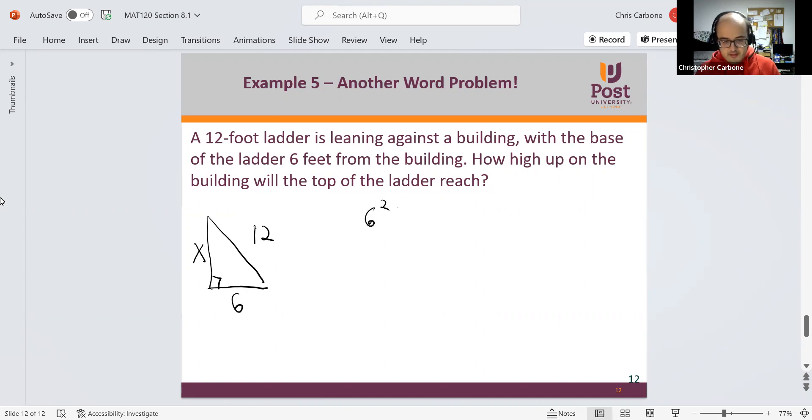So 6 squared plus x squared equals 12 squared. 36 plus x squared equals 144. Subtract the 36. So x squared equals 108.